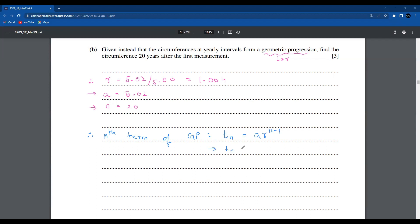I know that Tn equals 5.02 multiplied by 1.004 to the power of 20 minus 1, which is 19. So the Tn value is 5.02 times 1.004 to the power of 19, which equals 5.42 meters. That's your answer for part B of question four.